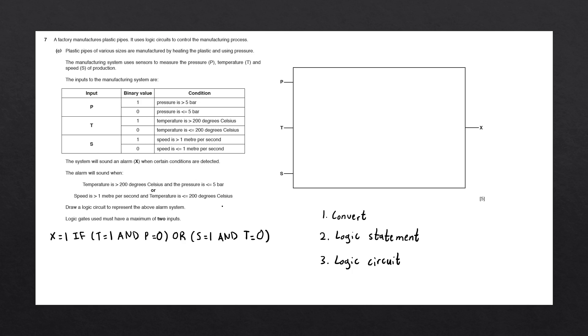The last statement says when the temperature is less than or equal to 200 degrees Celsius. Looking in the table, that aligns to when T is equal to 0, so we're going to write when T is equal to 0. We have now successfully written the statement in terms of P, T, and S. However, this doesn't look much like a logic statement, so let's move on to step number 2.